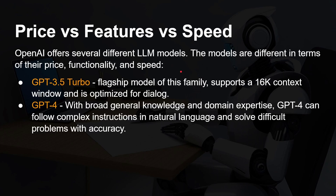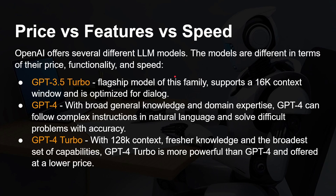Then we've got GPT 4, which brought in a whole bunch more functionality — broad general knowledge and domain expertise. GPT 4 can follow complex instructions in natural language and solve difficult problems with accuracy. And then very recently we had the announcement of GPT 4 Turbo with 128K context, fresher knowledge, and the broadest set of capabilities — it is the most powerful of the GPT 4 family.